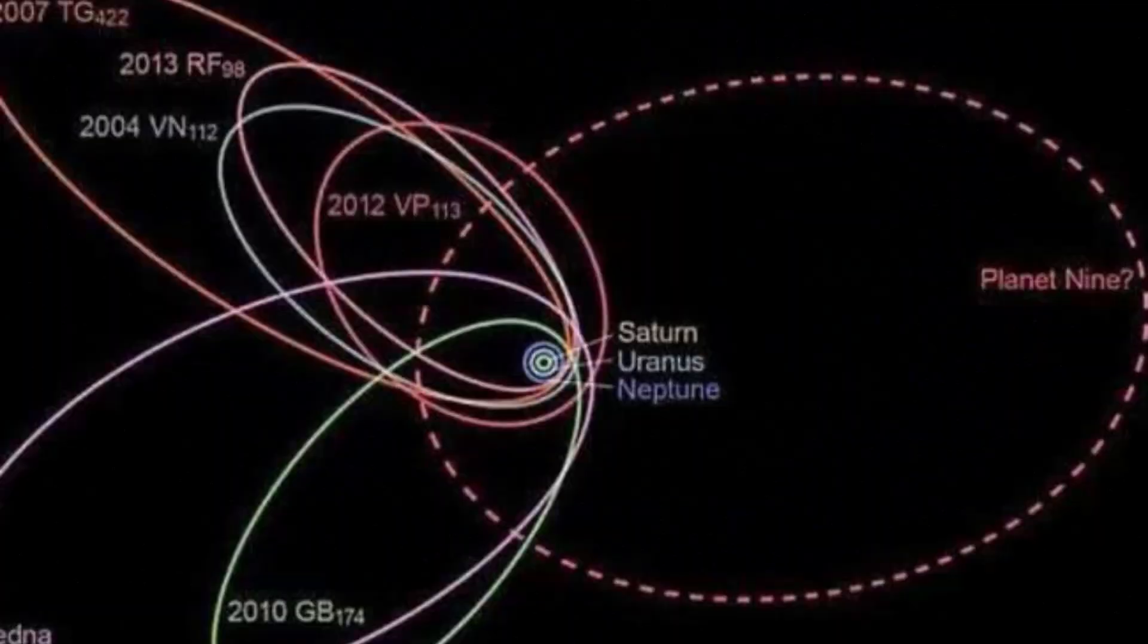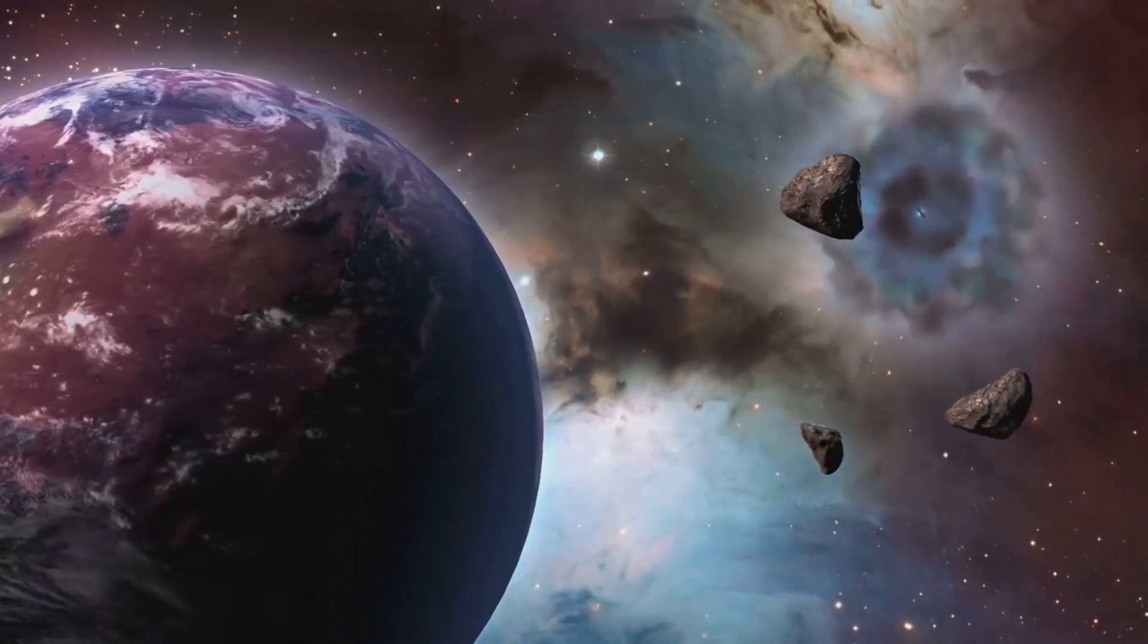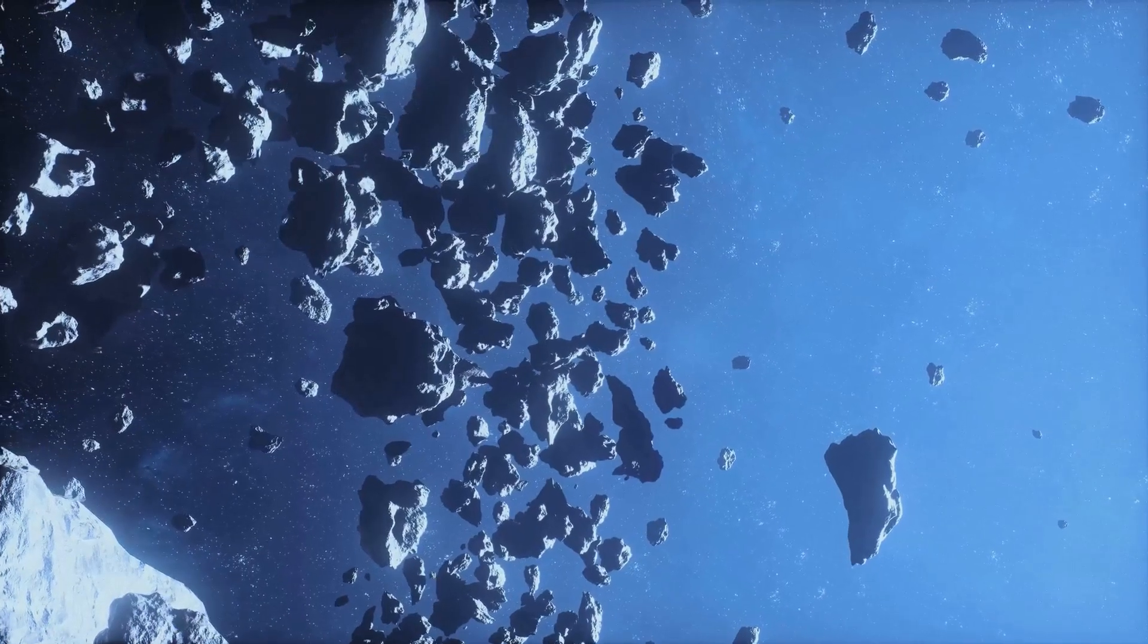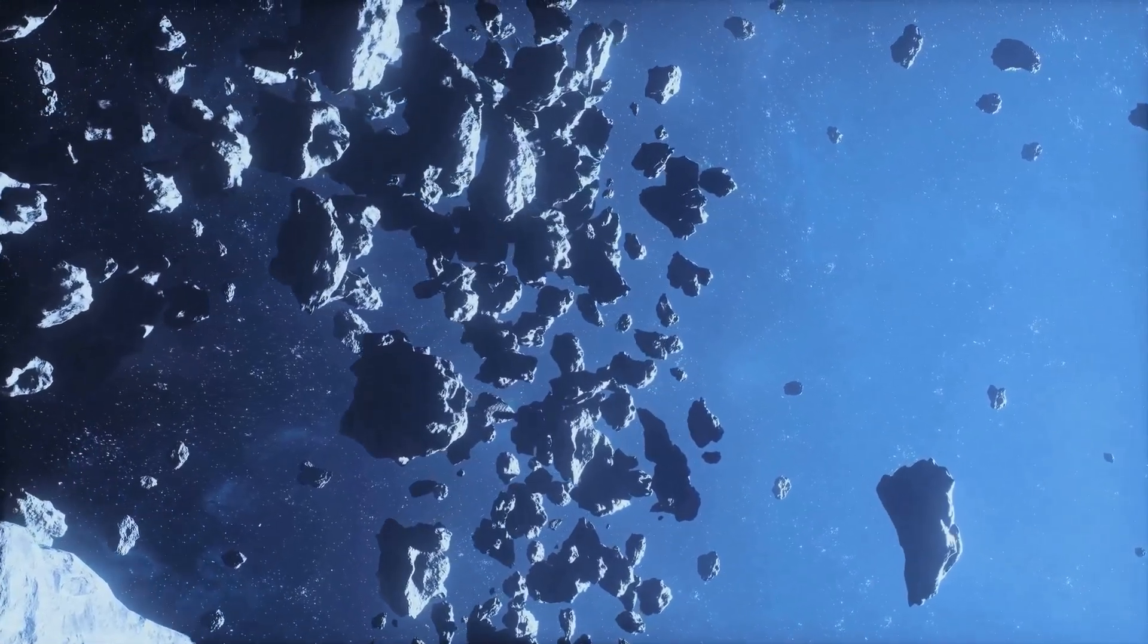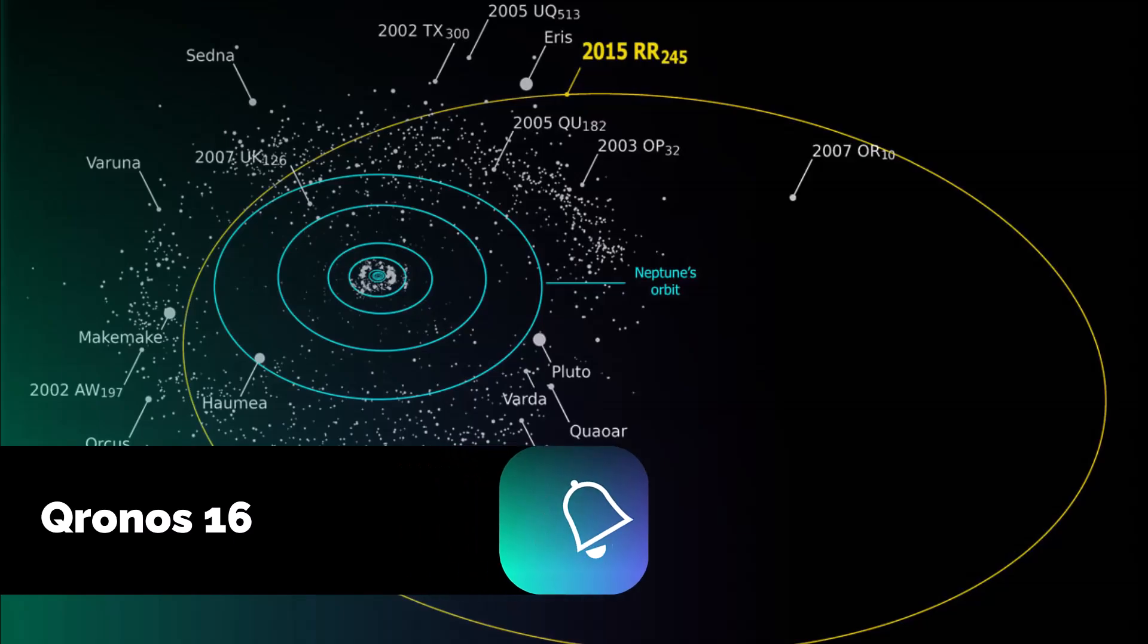In the case of Planet Nine, the telltale signs are found in the peculiar orbits of certain Kuiper Belt objects, or KBOs. These icy bodies, remnants from the early solar system, should be scattered randomly in their orbits. However, astronomers observed a curious pattern. A group of KBOs were clustered together, their orbits strangely aligned. These aligned orbits pointed towards a hidden force, a gravitational shepherd, herding these icy objects into their peculiar paths.